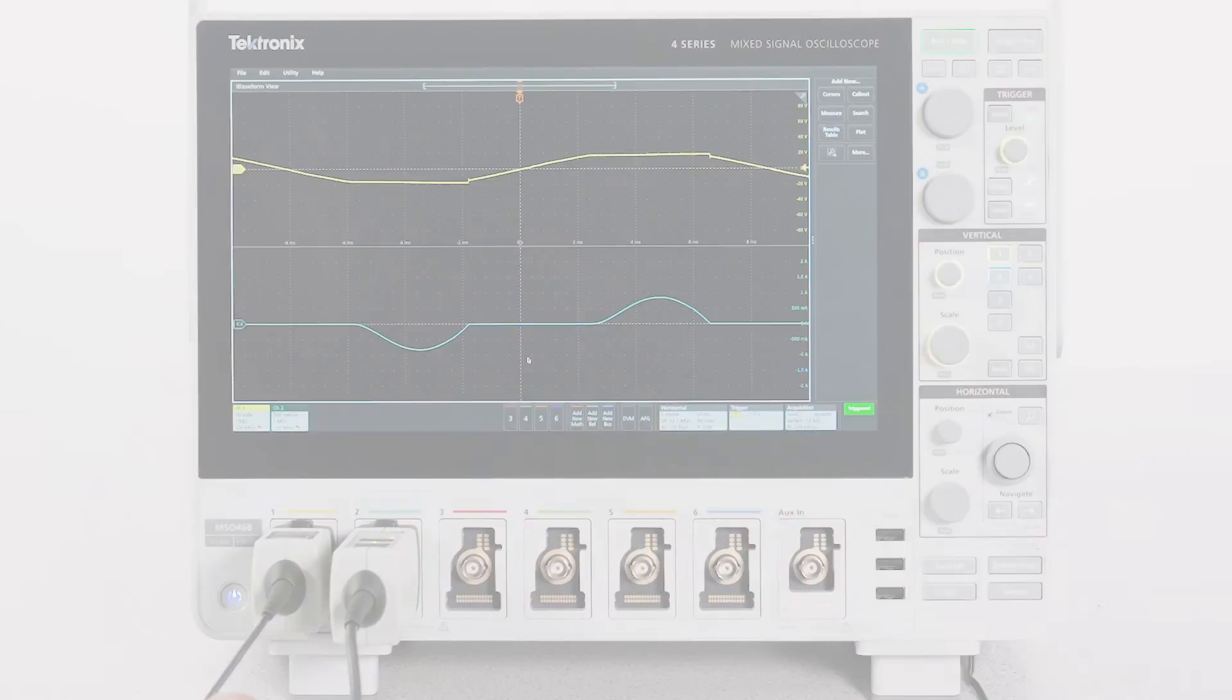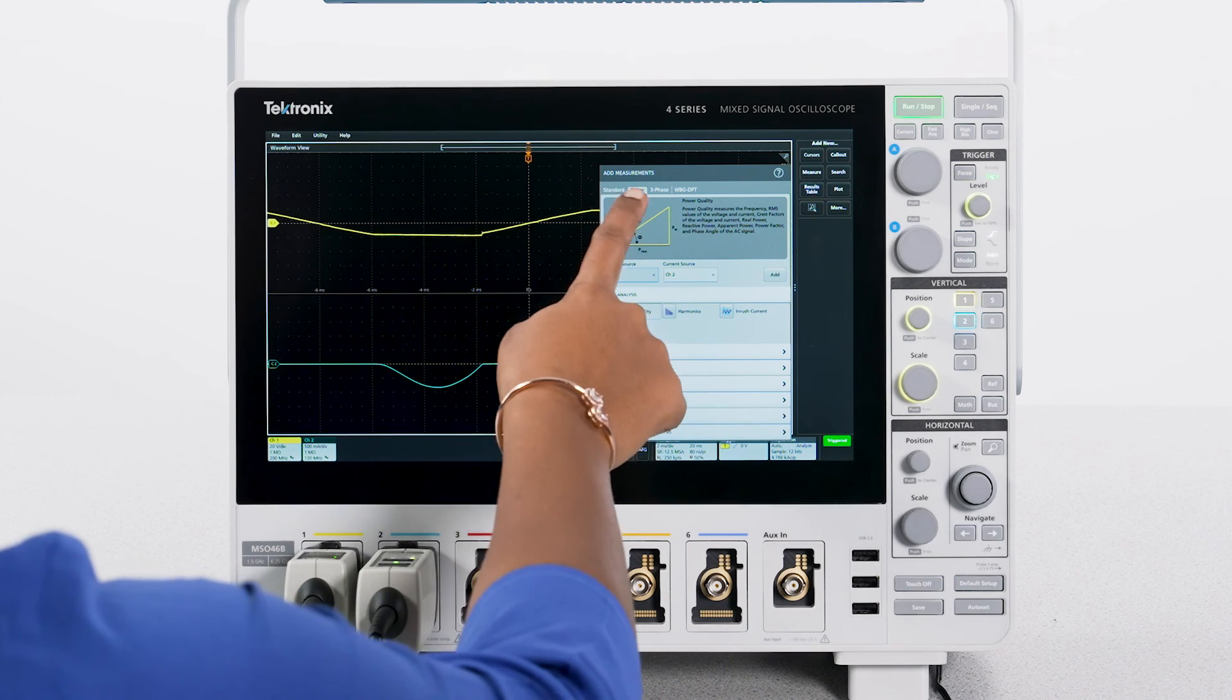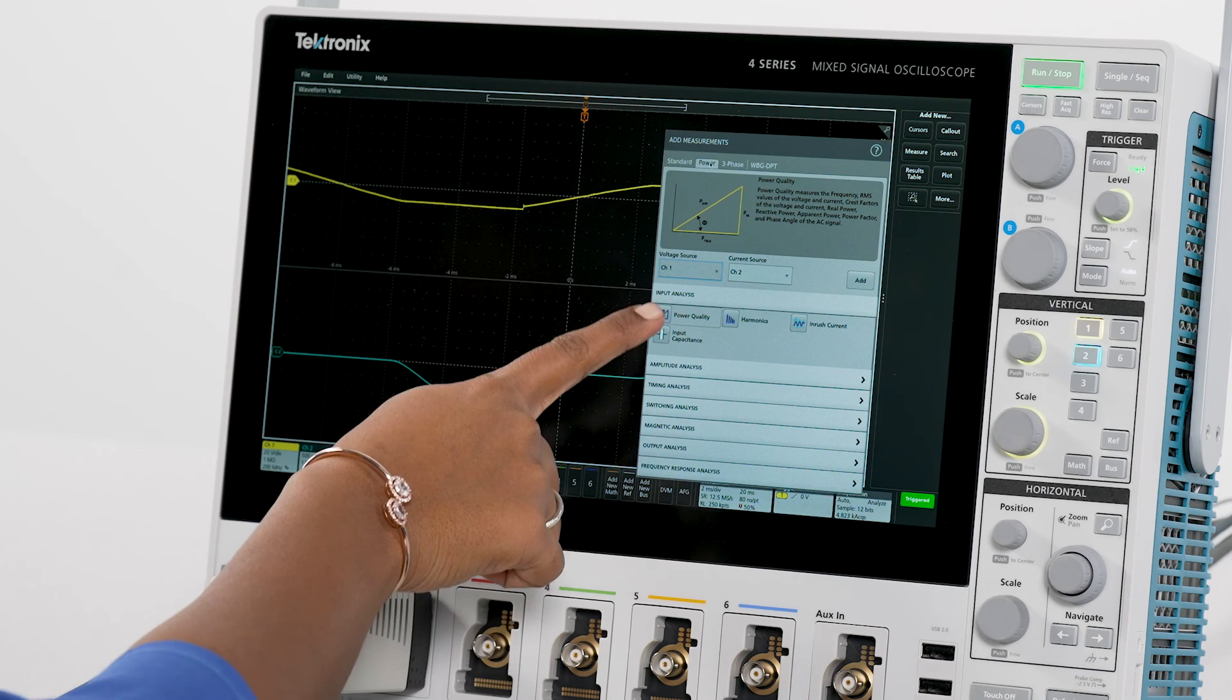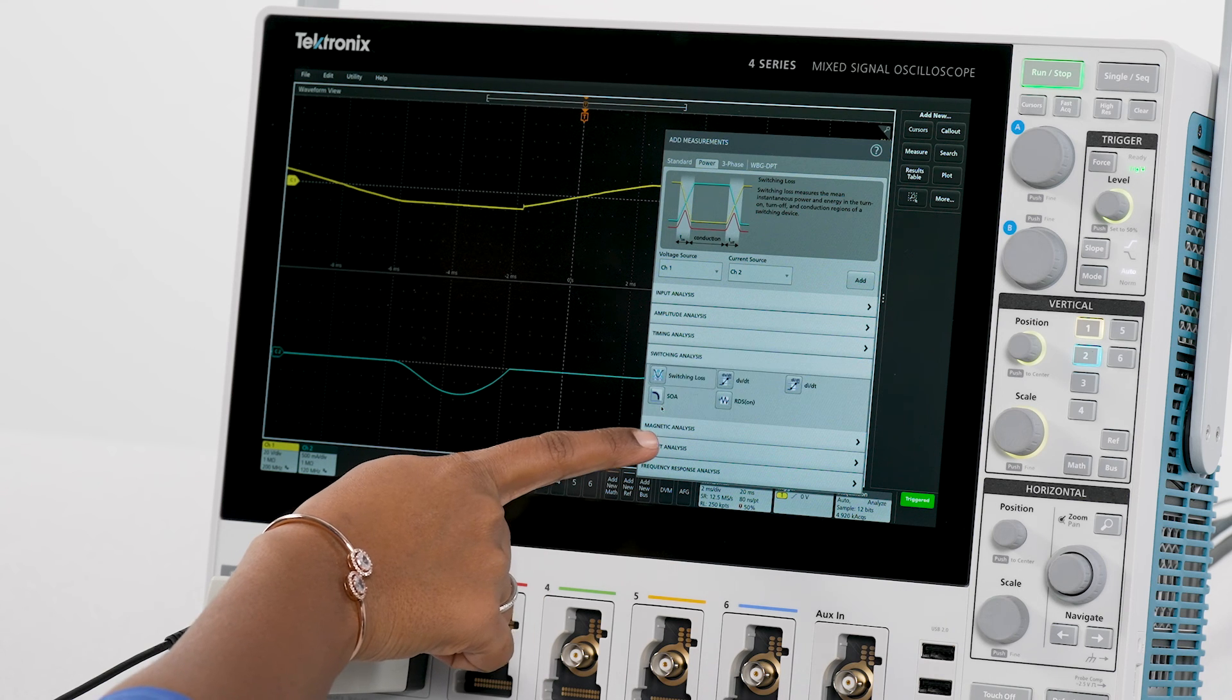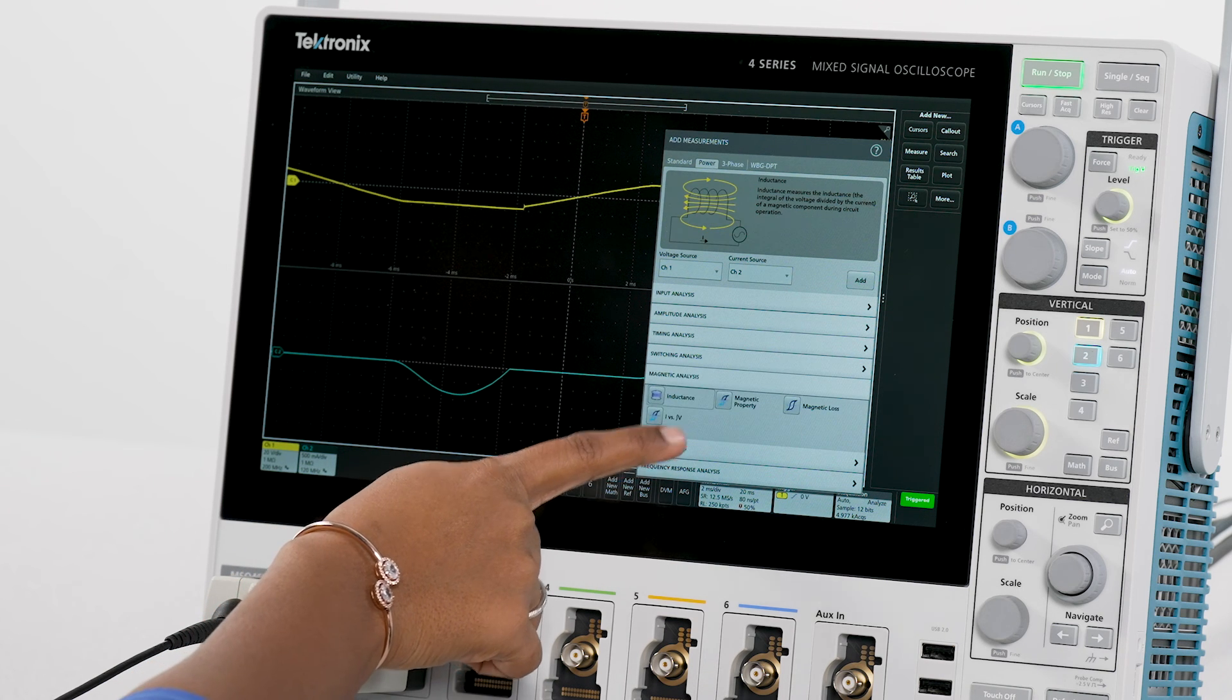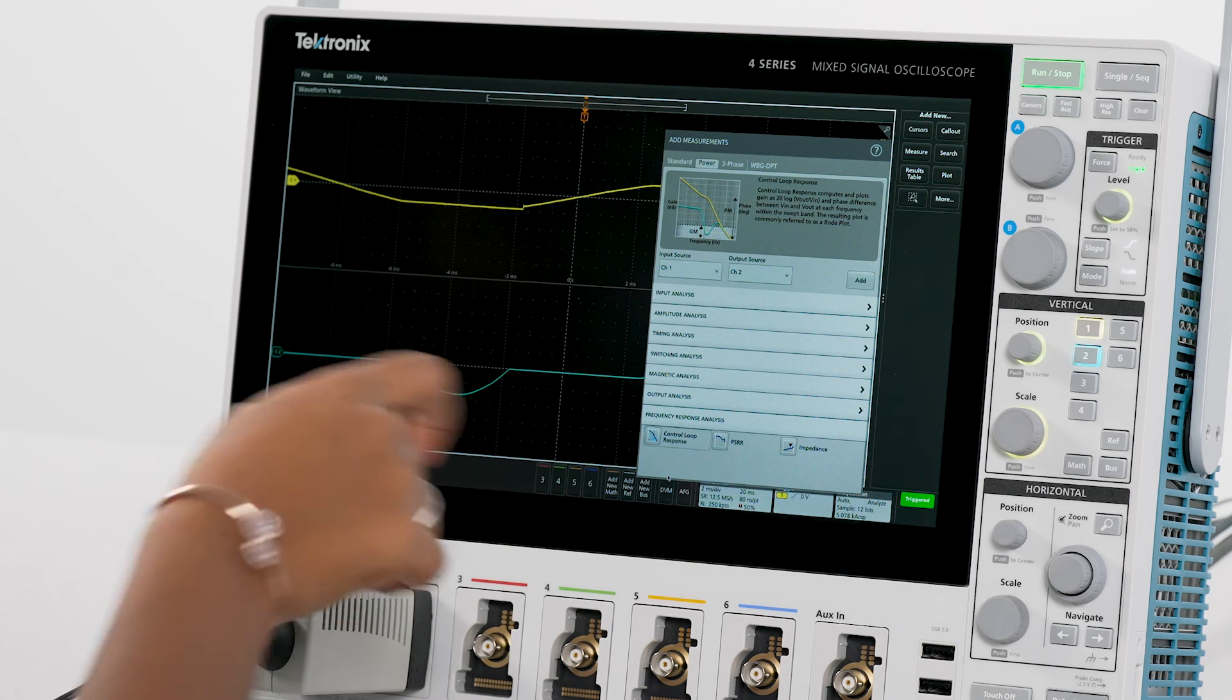Advanced power measurements are under the power tab. Key measurements include input measurements, amplitude and timing measurements, switching measurements, magnetic measurements, output measurements, and frequency response analysis.